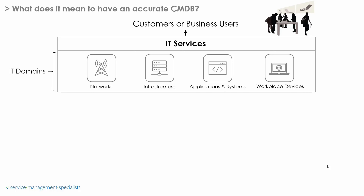In this example I've put some simple domains that we typically use. So domains are networks, infrastructure, applications and systems, and workplace devices. Your organisation may have more or may have less, but in this case we've targeted those four key domains.